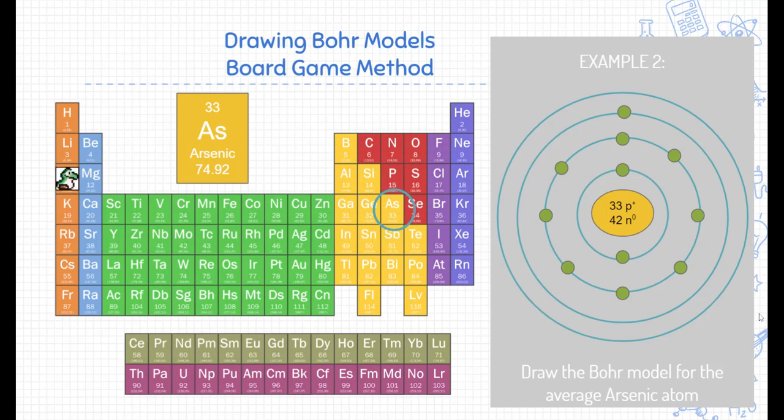Now we're going to keep going. One, two, three, four, five, six, seven, and eight. There are eight electrons that go on the third energy level. Let's go to the next energy level. One, two.